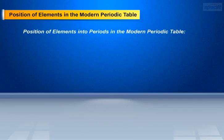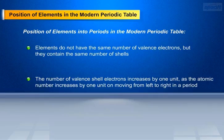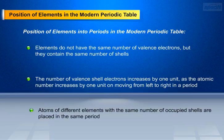Now let us move on to the position of elements in periods in the modern periodic table. Elements do not have the same number of valence electrons, but they contain the same number of shells. The number of valence shell electrons increases by 1 unit as the atomic number increases by 1 unit on moving from left to right in a period. Atoms of different elements with the same number of occupied shells are placed in the same period.